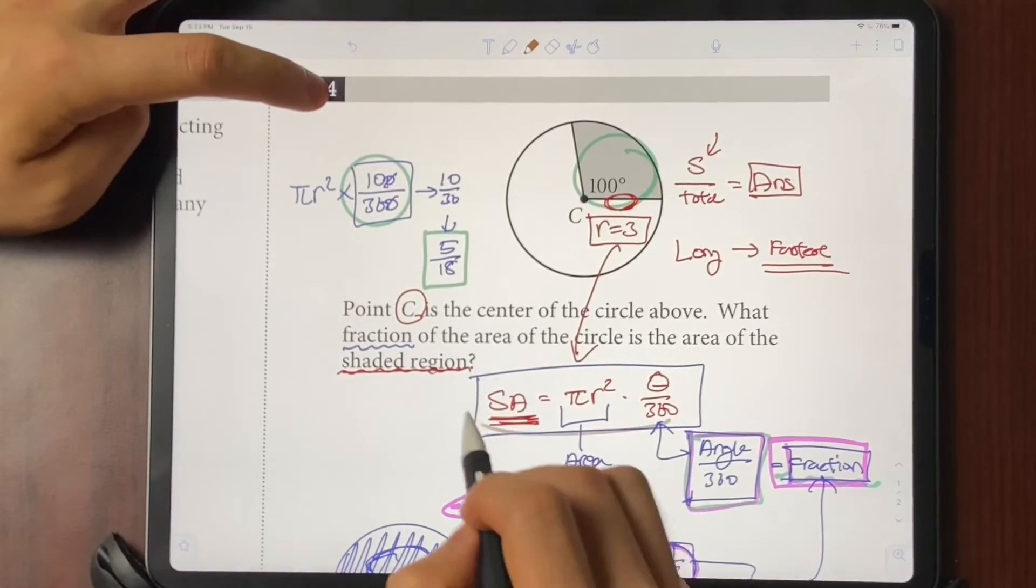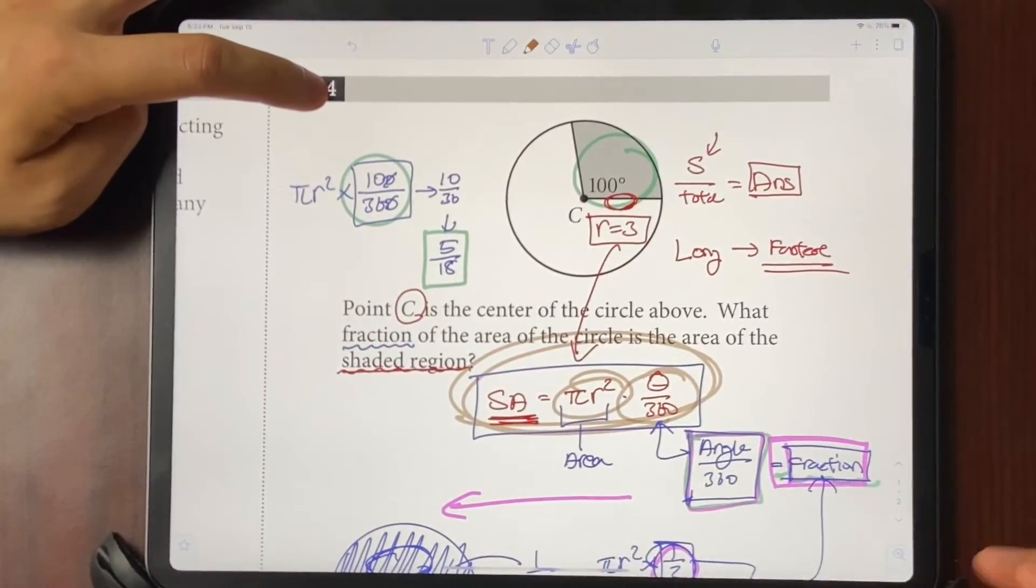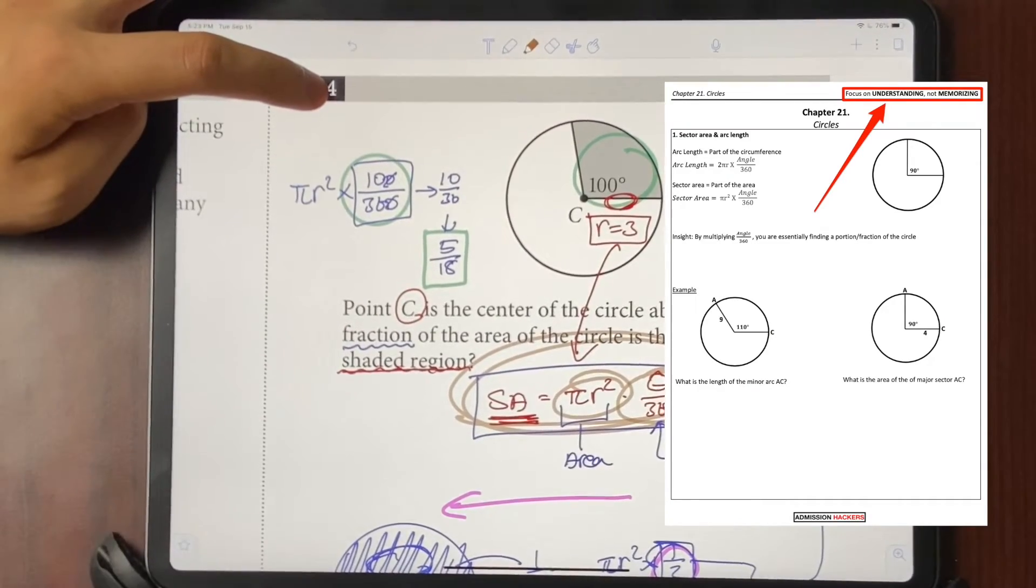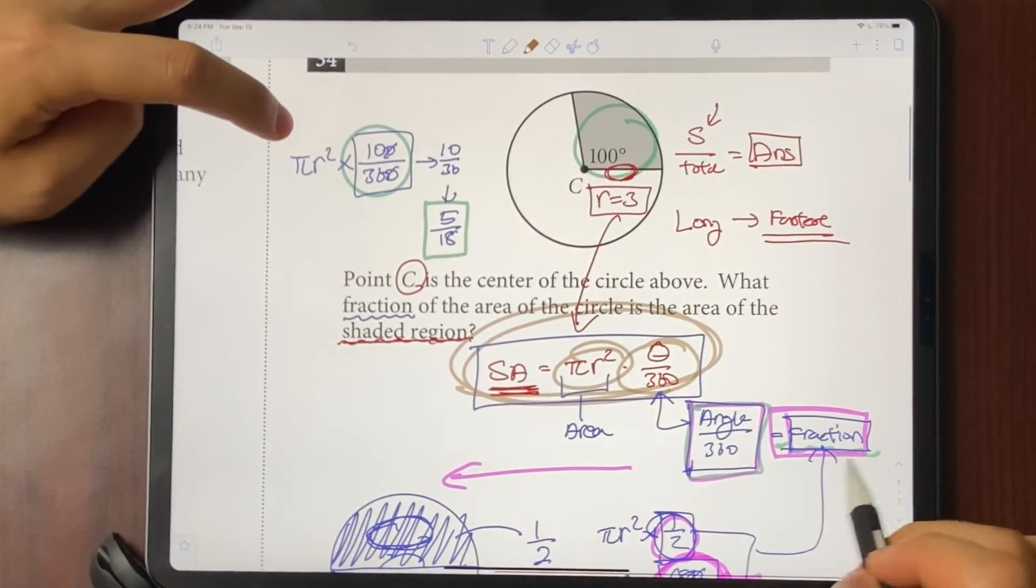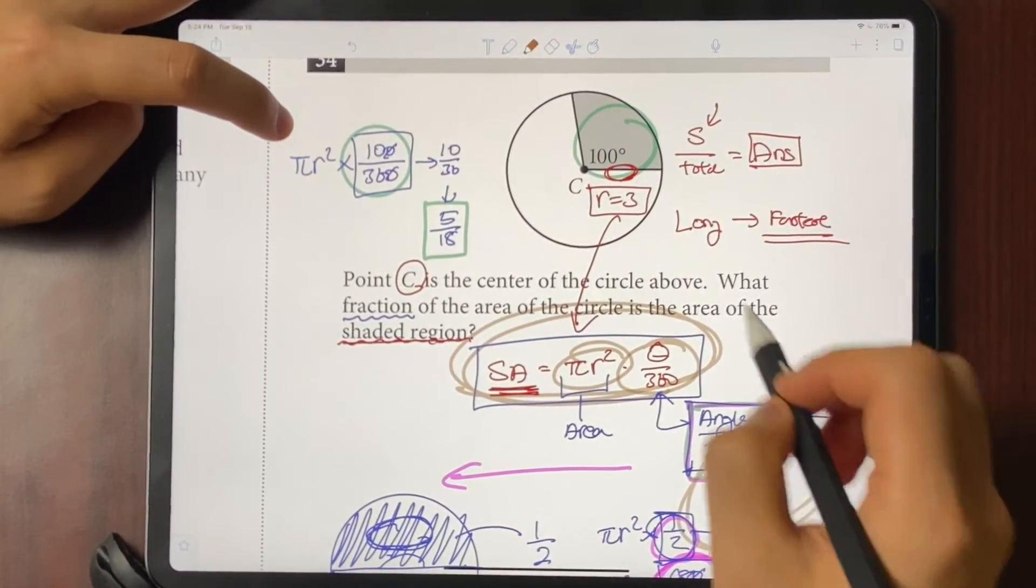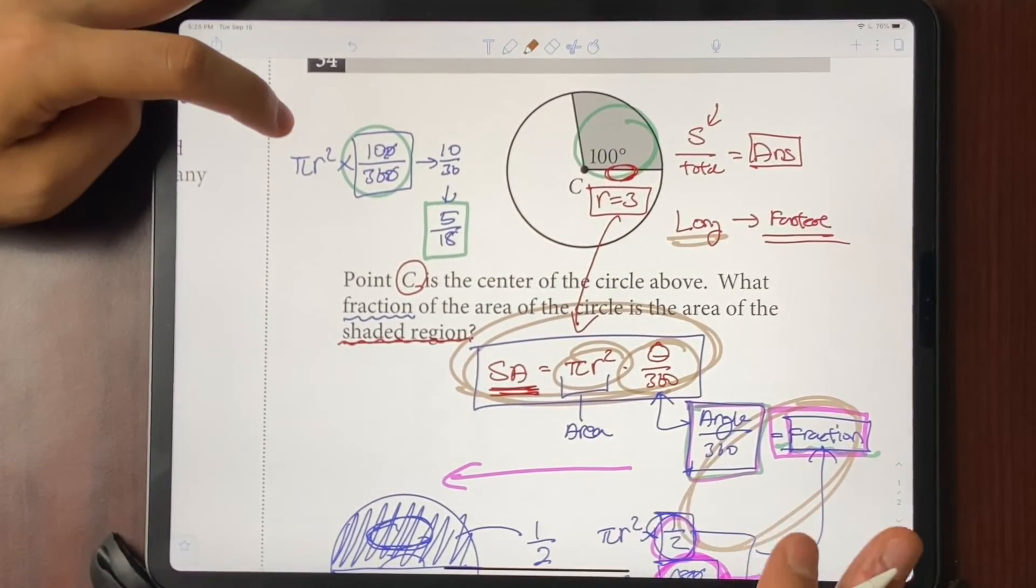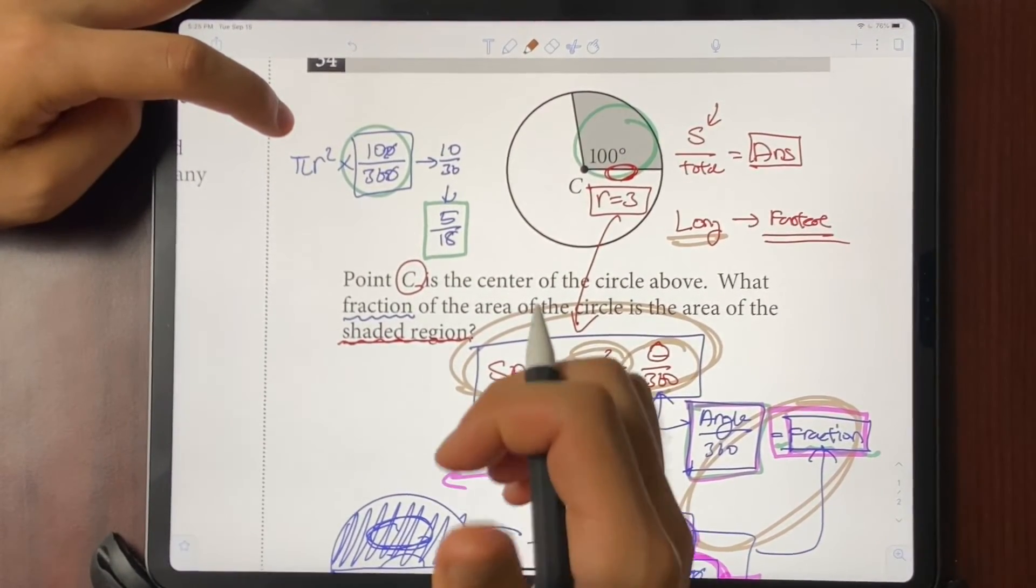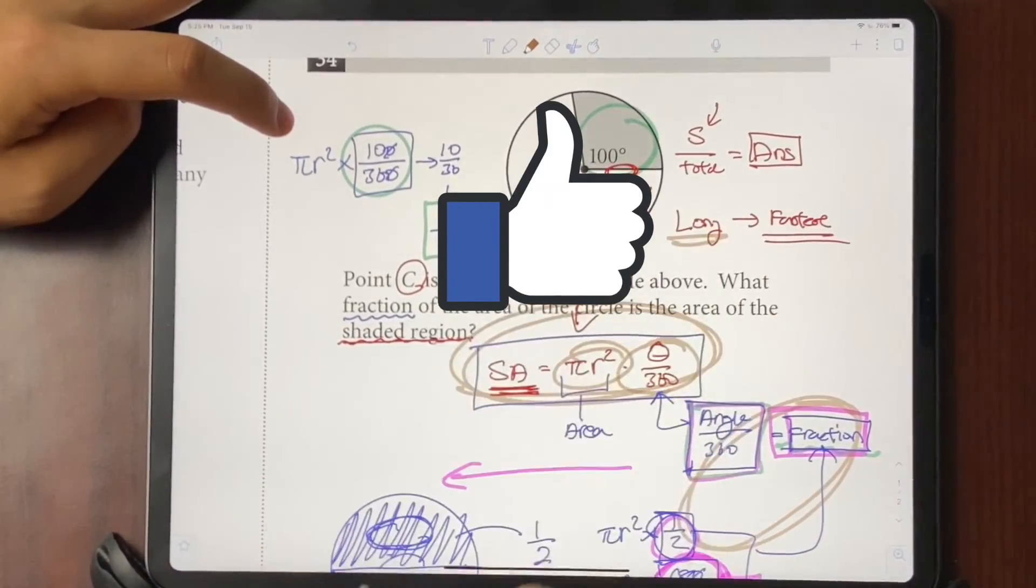So the main takeaway here is rather than just flat out memorizing your equations, try to understand what each of these things represent. That's why in my lectures, I always tell you focus on understanding rather than memorizing. If you just memorize this equation, you're not going to be able to see this connection right there and you're going to end up going the long way and have time issues on the SAT. So that's going to be it. If you guys found this video helpful, give it a thumbs up and I'll see you guys on the next video with faster ways to solve these tough questions. See you later.